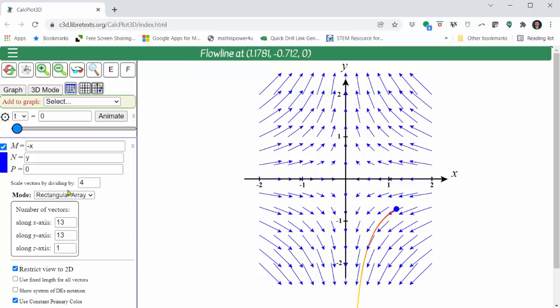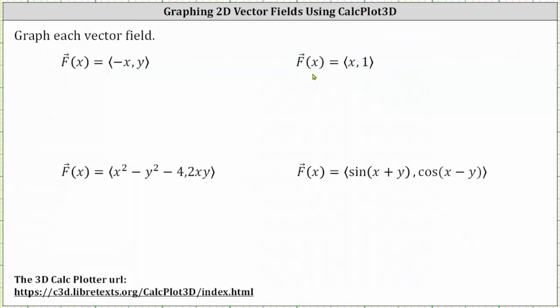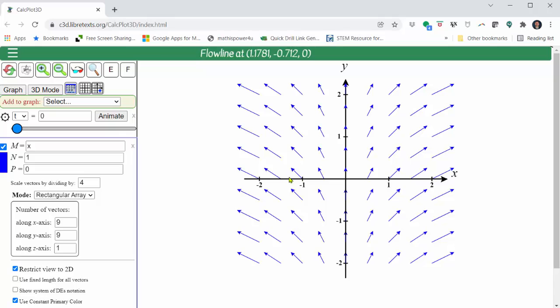Before we graph the next vector field, let's change the number of vectors along the x and y axes back to 9. And now let's graph the vector field where the x component is x and the y component is 1. So we simply change m to m equals x and n equals 1 and press enter. And we have the new vector field.